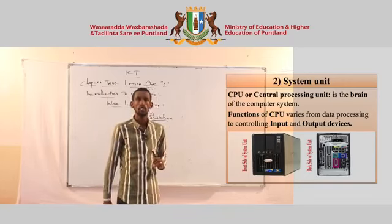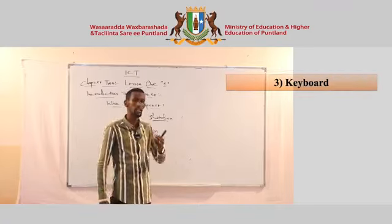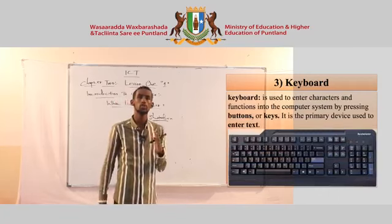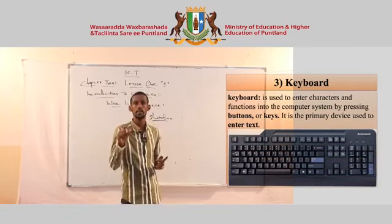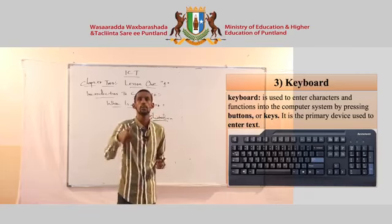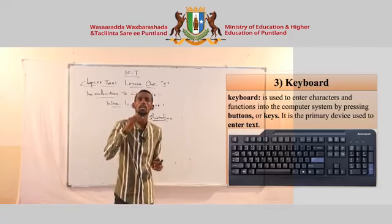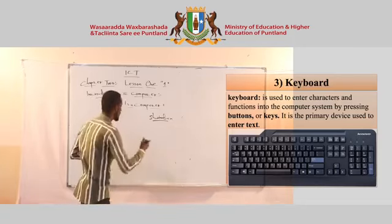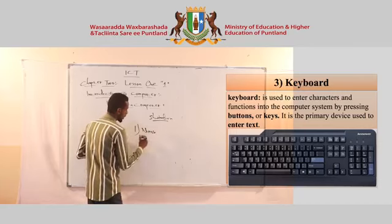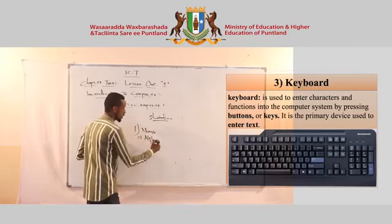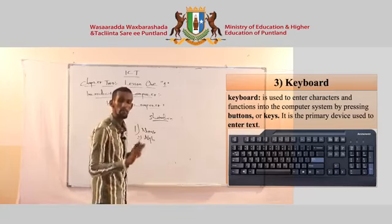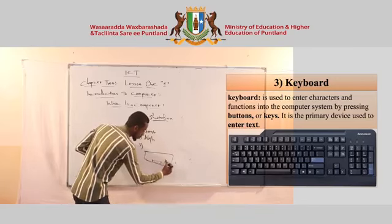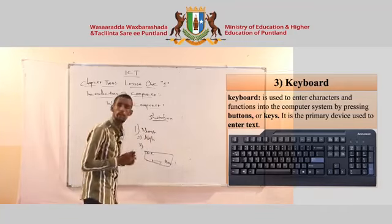If you want to use the keyboard, you can use it to enter characters and functions into the computer system by pressing buttons or keys. It is a primary input device. You can use your keyboard — it includes keys such as space, enter, F1, F2, and number keys.